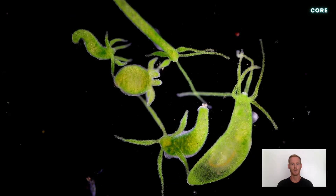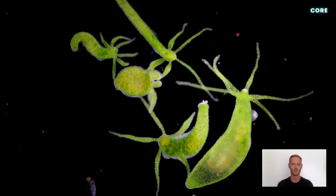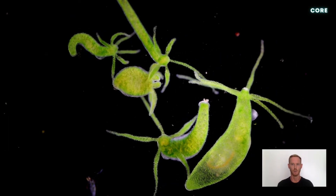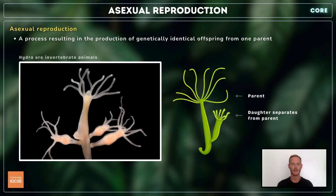In addition to plants, some invertebrate animals are able to reproduce asexually. In the pond-dwelling hydra, tentacles grow outwards from the column or central stem. These new hydra eventually break away from the column and in doing so become independent organisms.